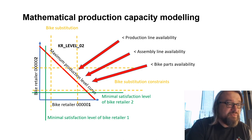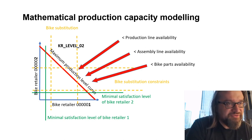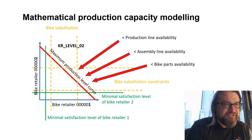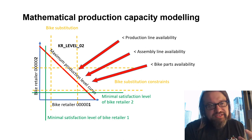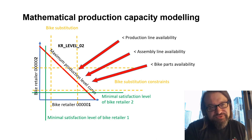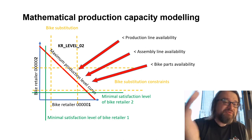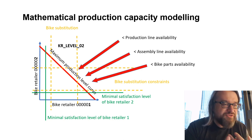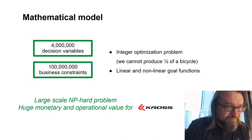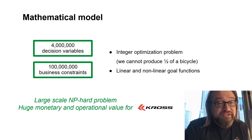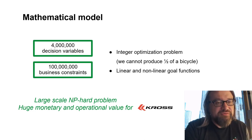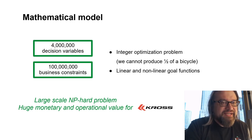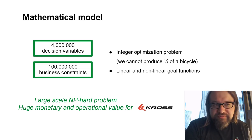Suppose we have two bike retailers and some maximum production capacity — a result of production line availability, assembly line availability, and bike parts availability — also interconnected through the bike substitution process. For example, customers order green bikes but are provided blue bikes instead, because we can't produce exactly what dealerships have ordered. To handle this, we built a mathematical programming model with four million decision variables and around 100 million business constraints. This is a mixed integer linear programming model; some quadratic programming models were also involved.